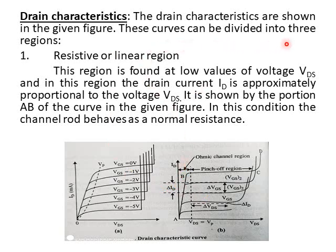The output characteristic curves can be divided into three regions. From A to B, the drain current increases linearly. From B to C, it remains approximately constant. From C to D, it increases abruptly. These three regions are: the ohmic or linear or resistive region (A to B), the saturation region (B to C), and the breakdown region (C to D).